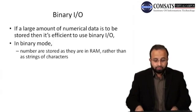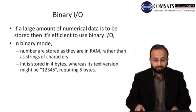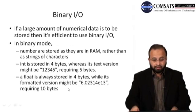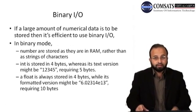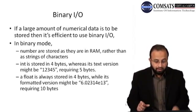In binary mode, numbers are stored as they are in RAM rather than as a string of characters. An int is stored in 4 bytes, whereas its text version such as '12345' requires 5 bytes. A float is always stored in 4 bytes, while its formatted version like '6.02314' can require 10 bytes. Binary I/O is therefore the more efficient way to store numeric data.